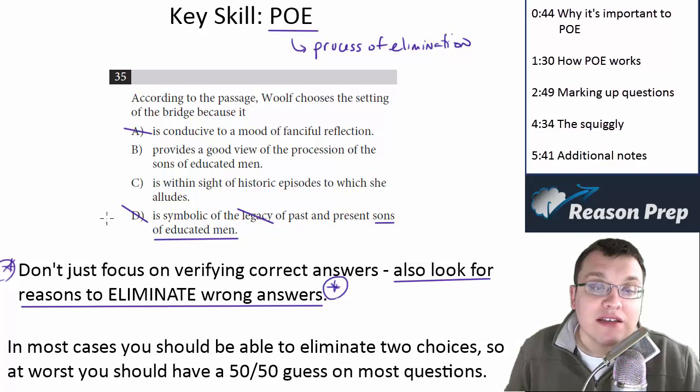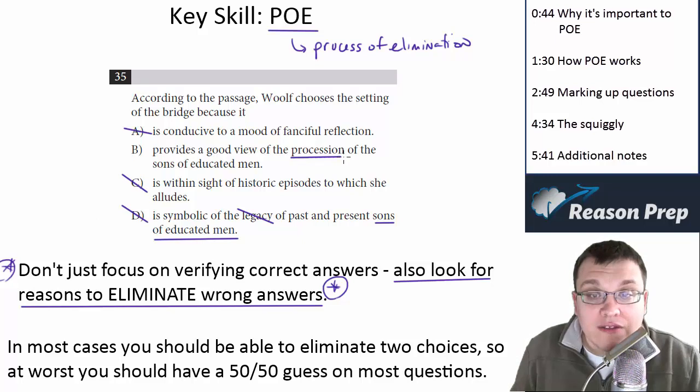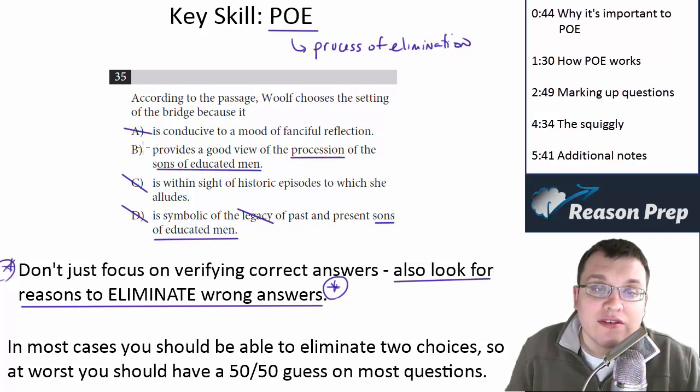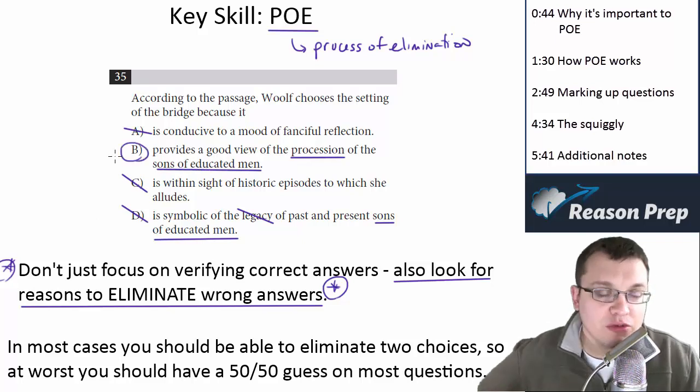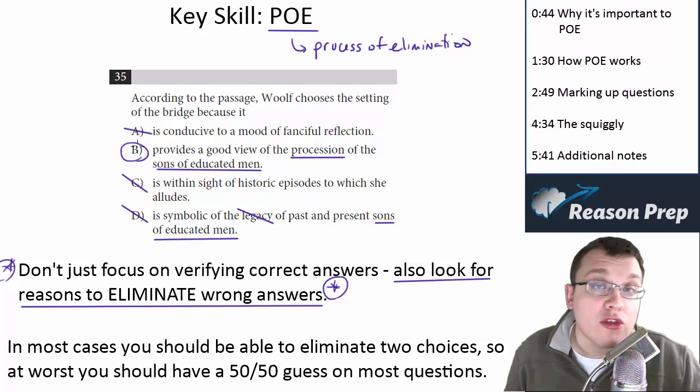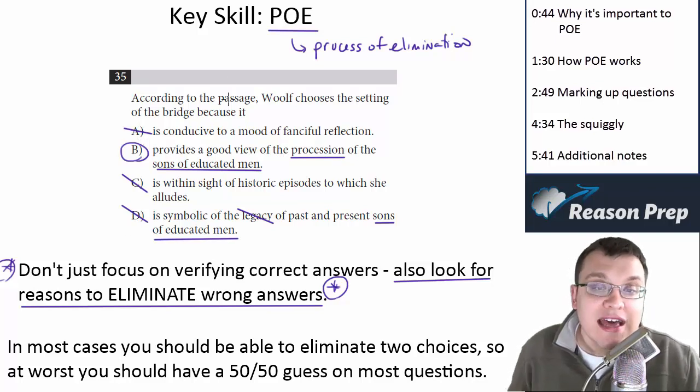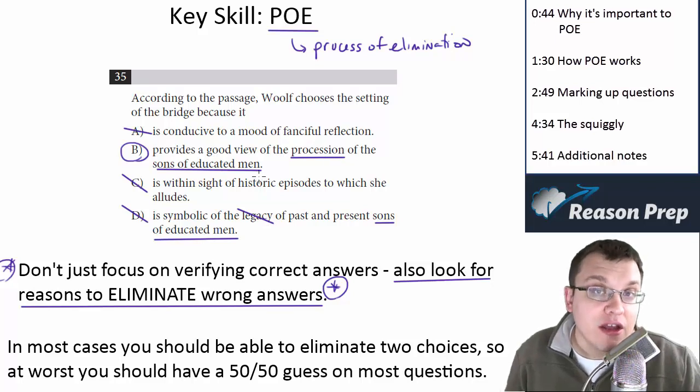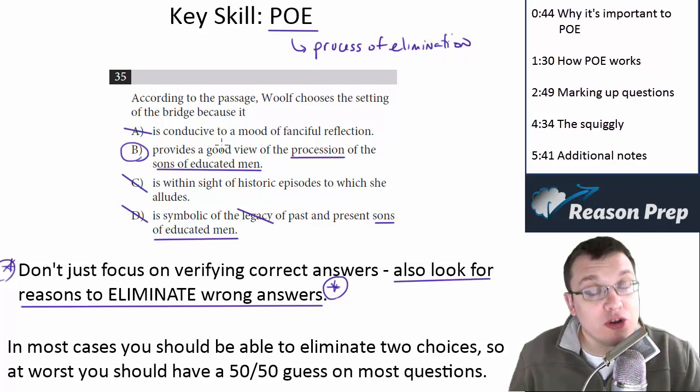So notice in this process, if I look, let's say C, you eliminated. And let's say in B, you like the fact that it mentioned the procession of the sons of educated men. So you think B fits with the passage. Notice if you show me this for your homework, it's much clearer what your thought process was. First, I can see that you evaluated all four choices. Second, I can see that when you evaluated the choices, you picked out specific words, let's say in D, that you didn't think fit. And in B, you picked out specific words that you did think fit.